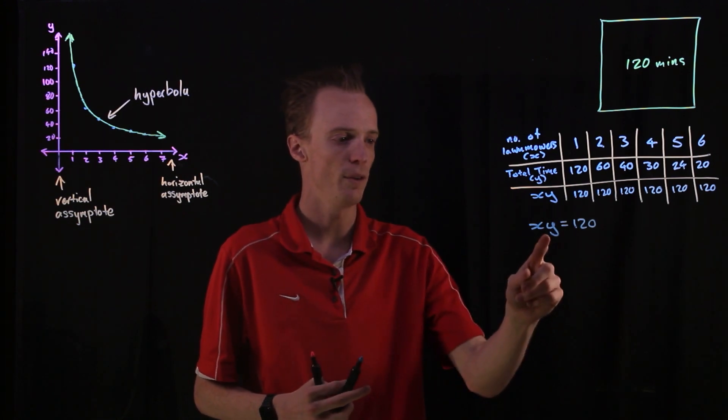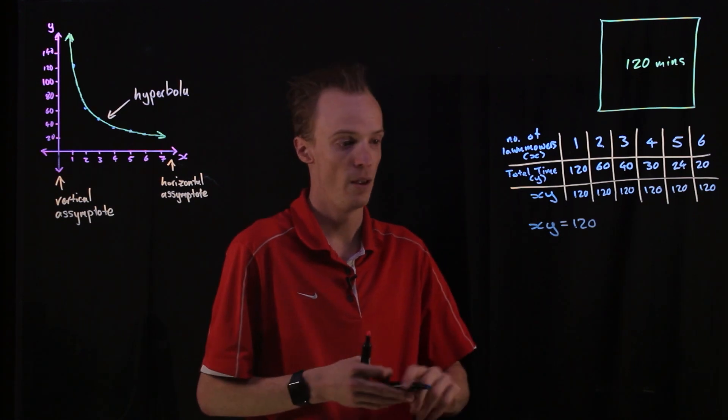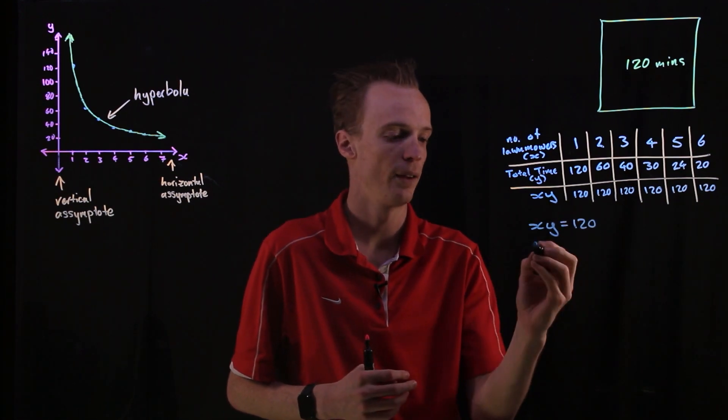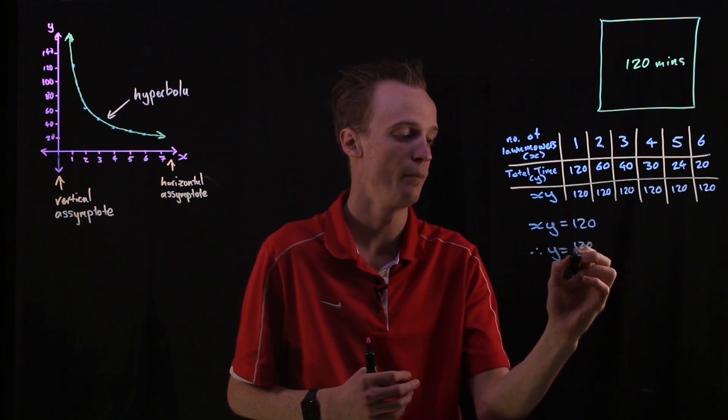And if I wanted to represent this relationship as an equation expressed with y equals, I'd need to divide both sides by x. So my y would equal 120 divided by x.